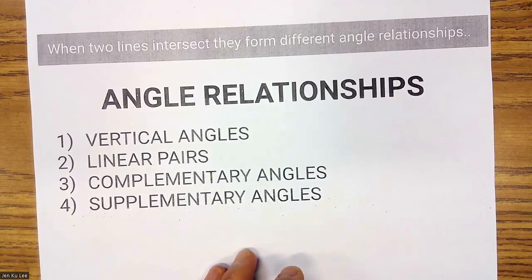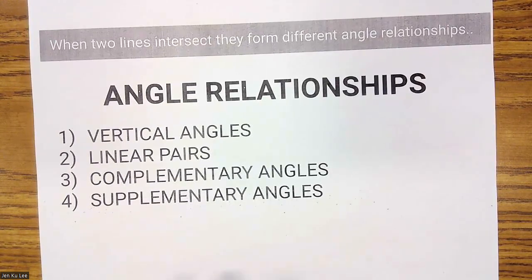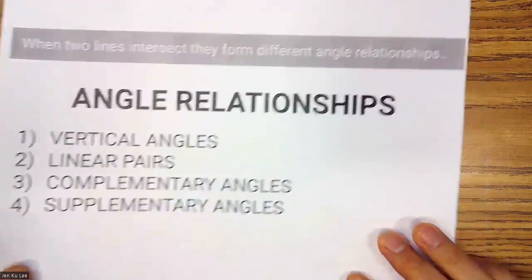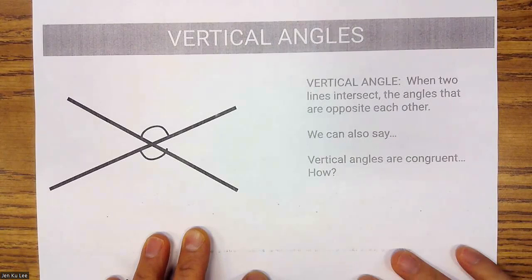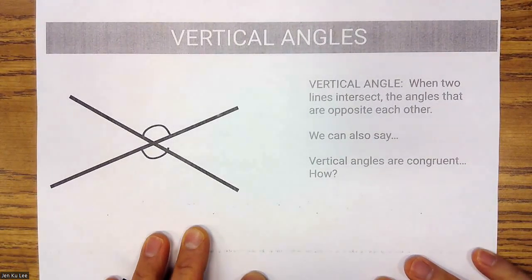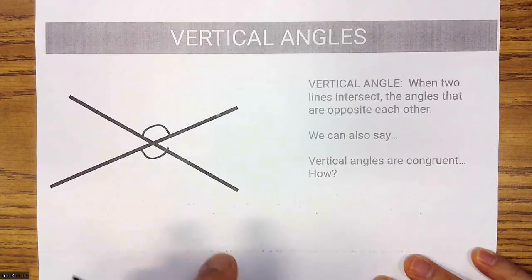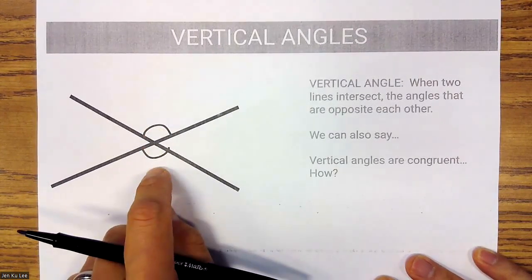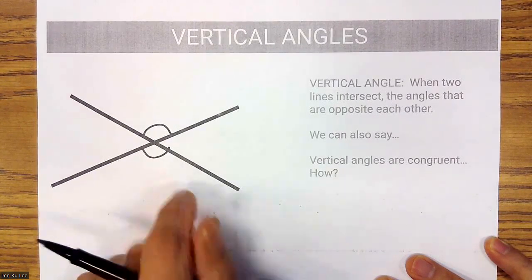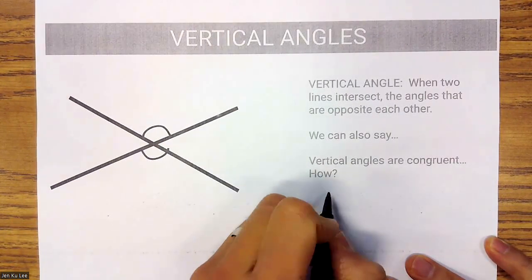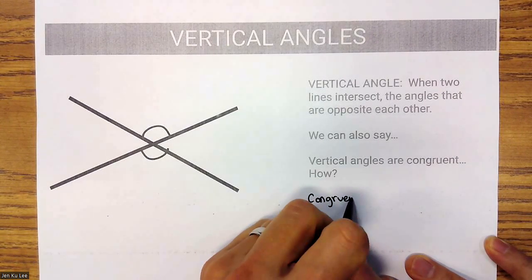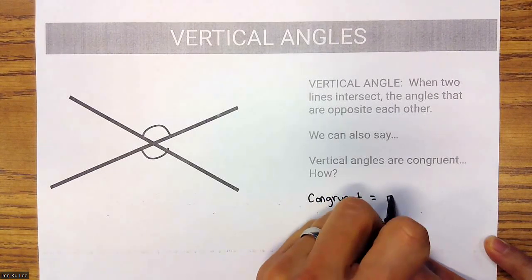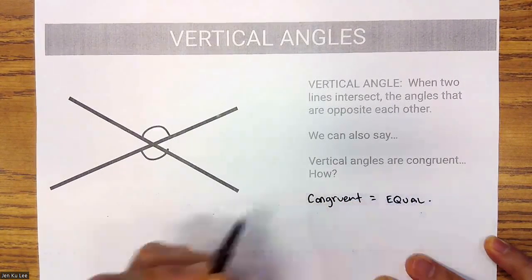Some of these you already know from the past, which we'll cover quickly. Vertical angles are when two lines intersect and the angles that are opposite each other are vertical angles. Vertical angles are congruent, meaning that they are equal.